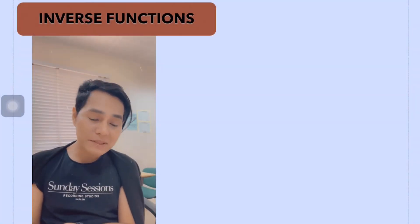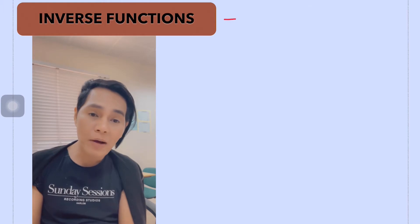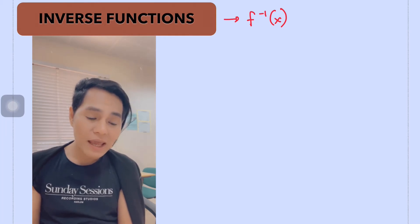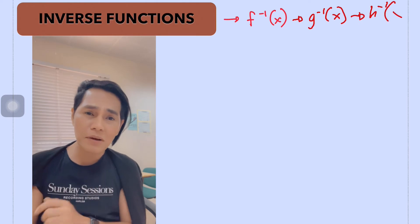Inverse functions can be represented in algebraic form f to the power of negative 1 of x, wherein the negative 1 here is a representation that this is an inverse function. And f here can also be represented as g or h which are the most commonly used variables in terms of functions. But what do you mean by inverse function?